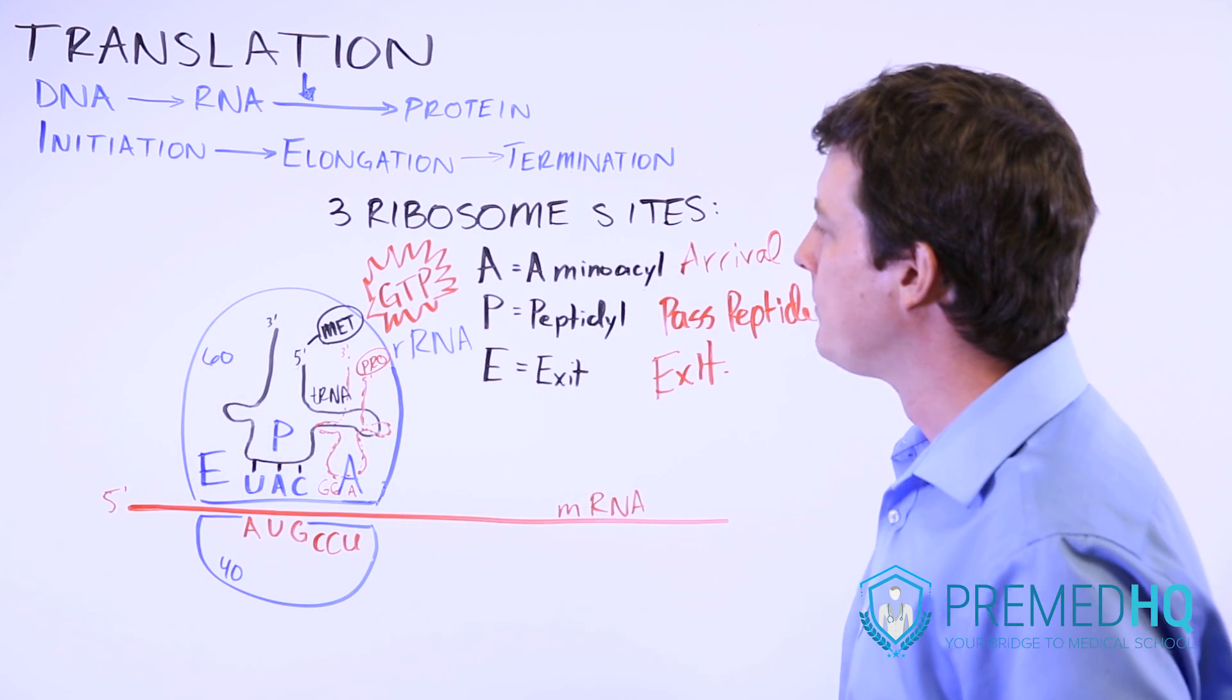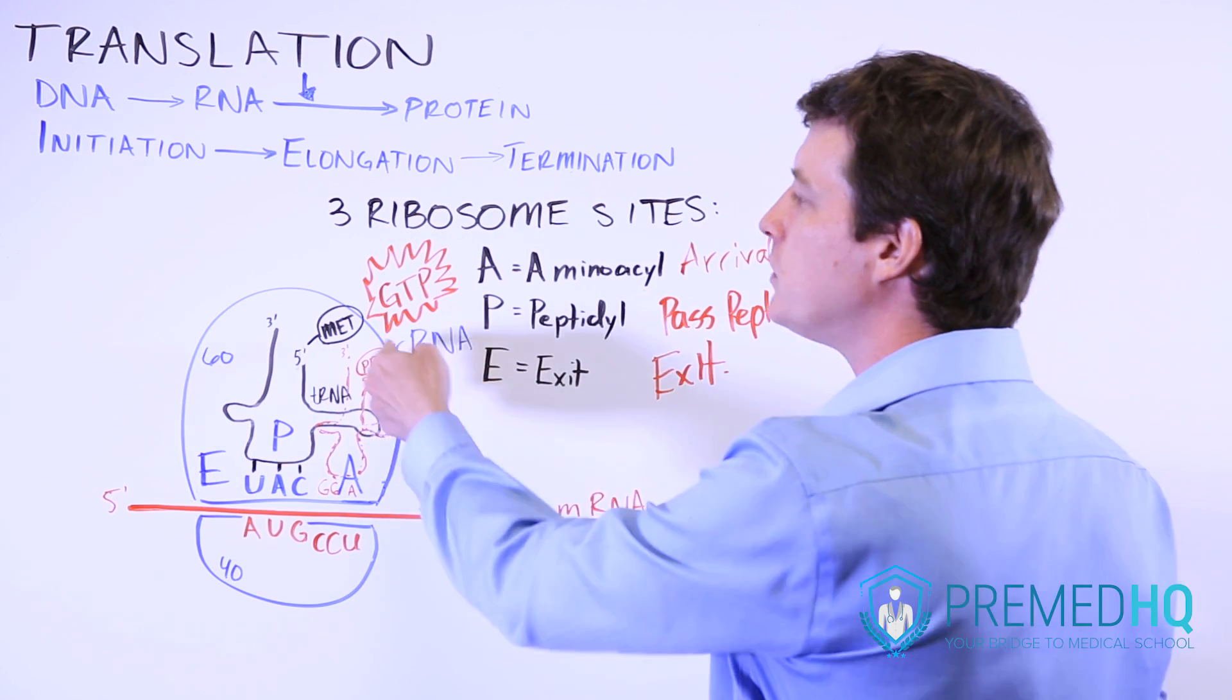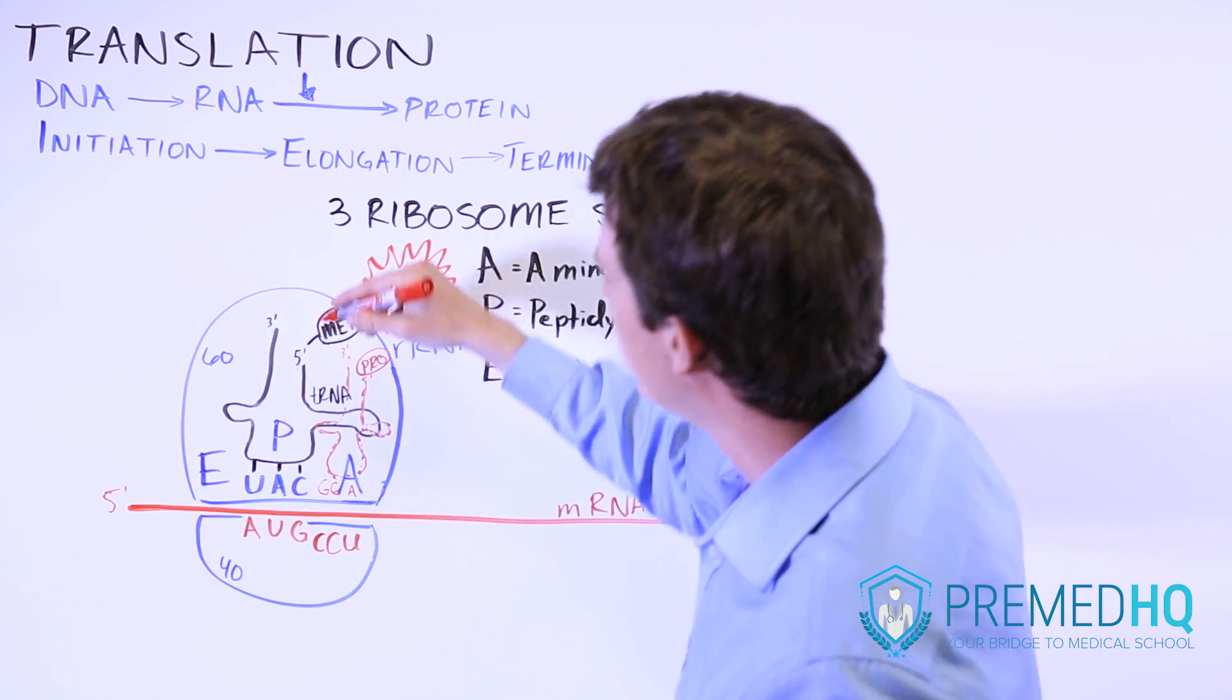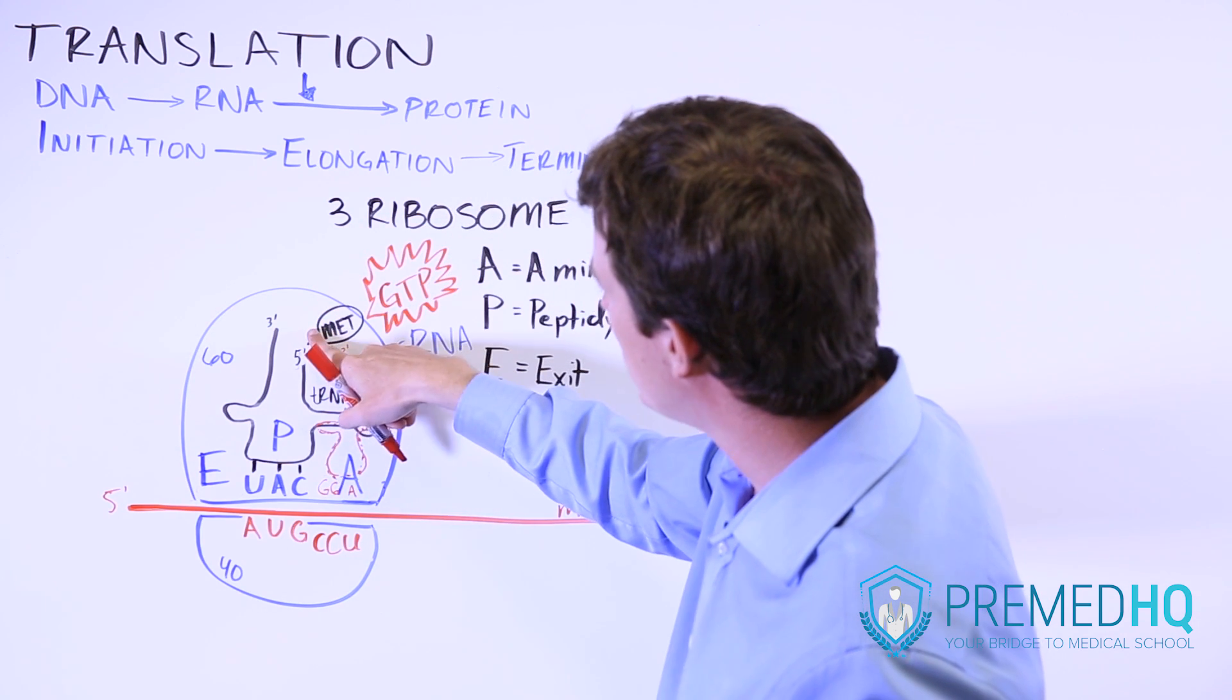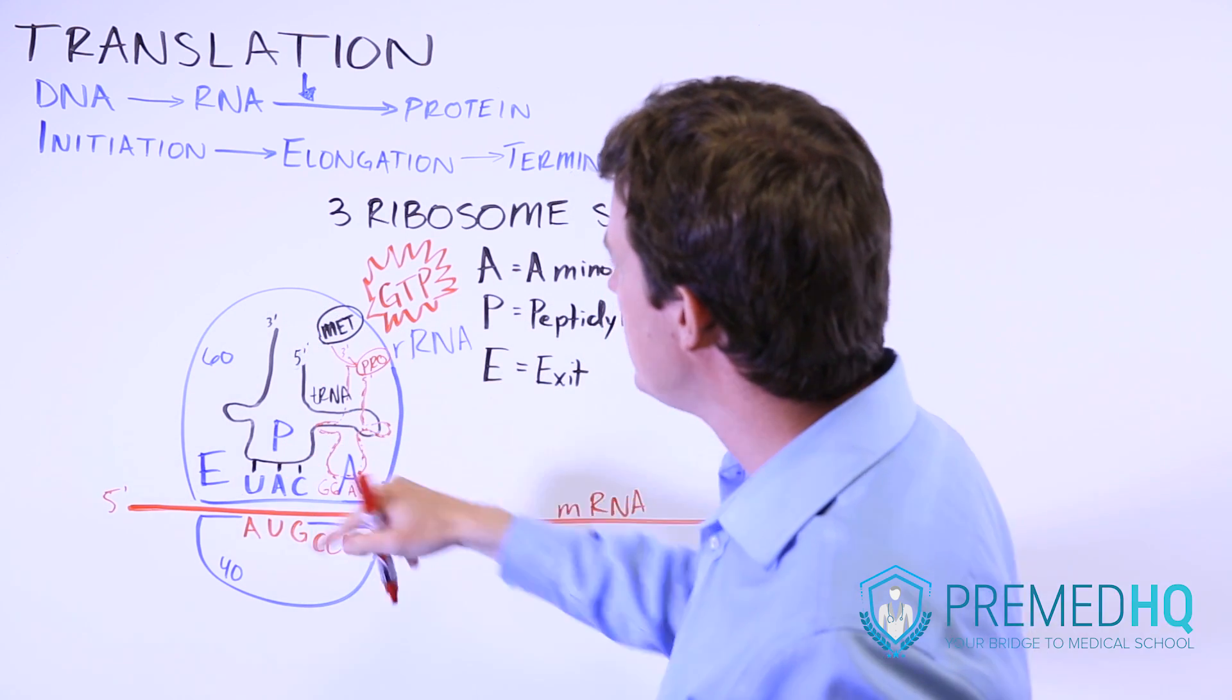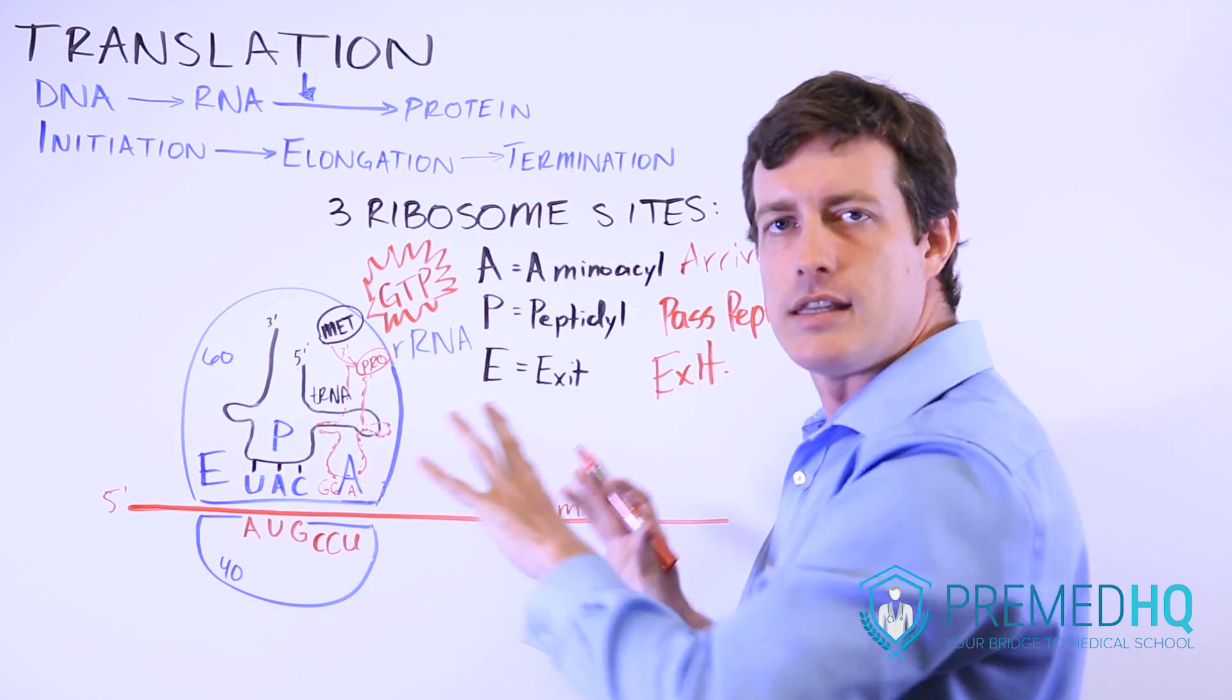And what will happen is the GTP will be used up as the tRNA in the P site passes its peptide over to the A site, and so it will detach from the tRNA that is in the P site and it will pass that over to the thing in the A site.